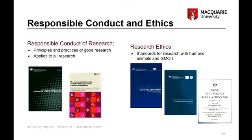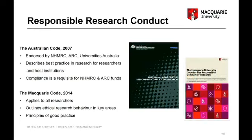I'll focus on the Australian Code and the Macquarie Code, while my colleague will cover animal ethics and human ethics approval processes. These codes were designed to guide institutions and researchers in responsible research practices, to promote integrity in research, and to explain what's expected of you as researchers and what's expected of the institution — what Macquarie's obligations are to you, what your supervisor's obligations are, and what you need to do. They also provide advice to staff responsible for managing departures from the code or departures from best practice.